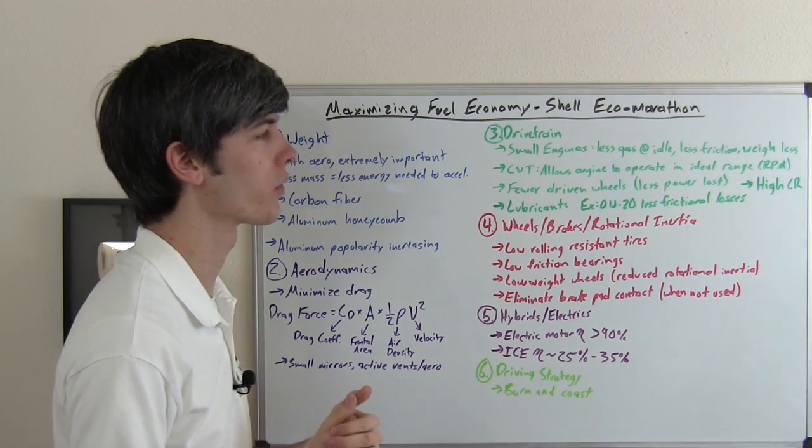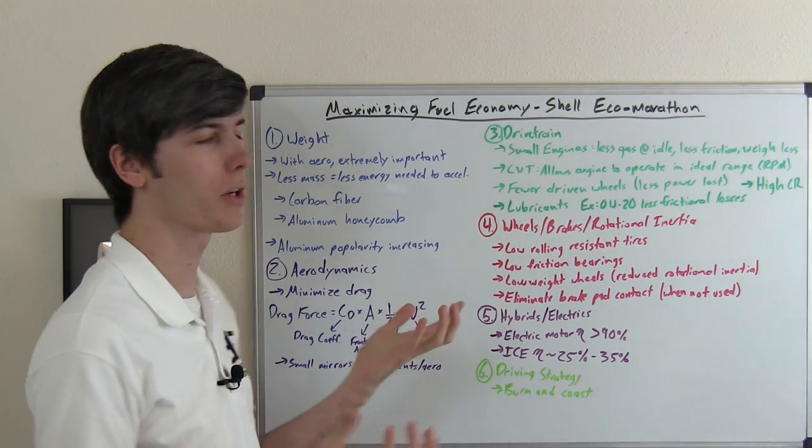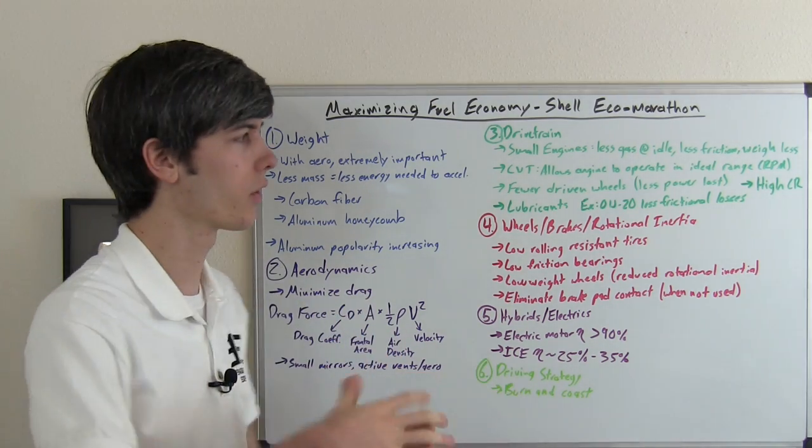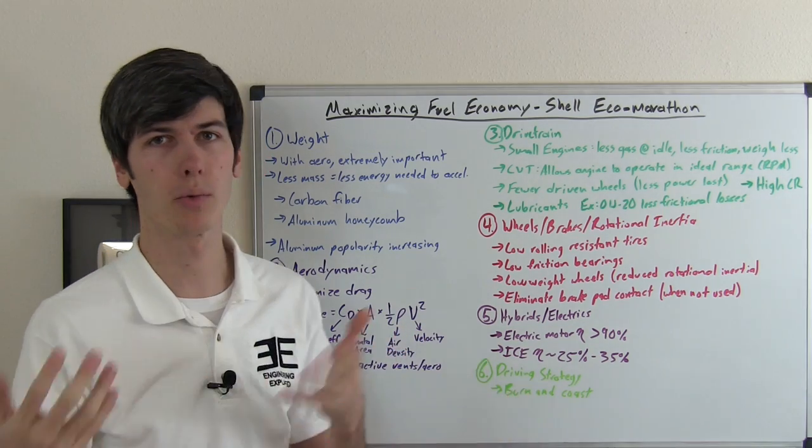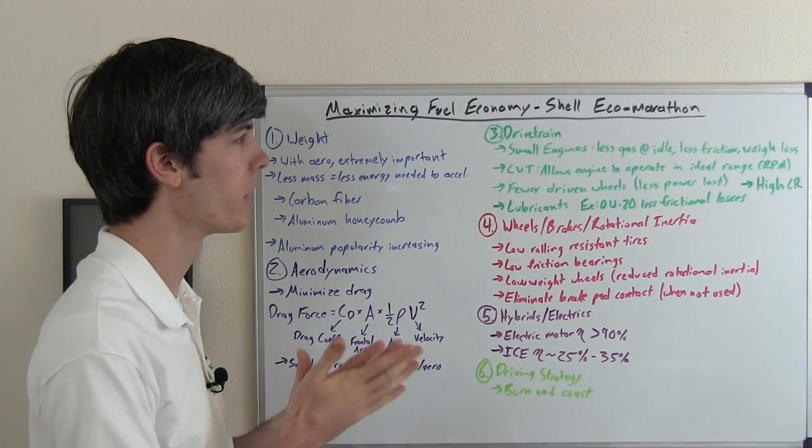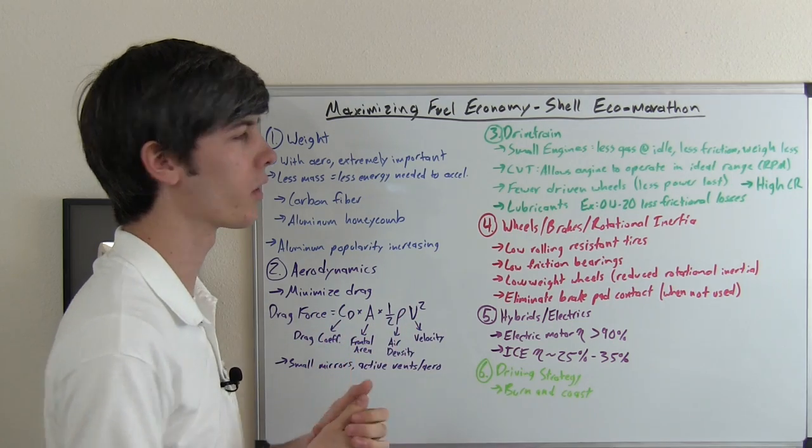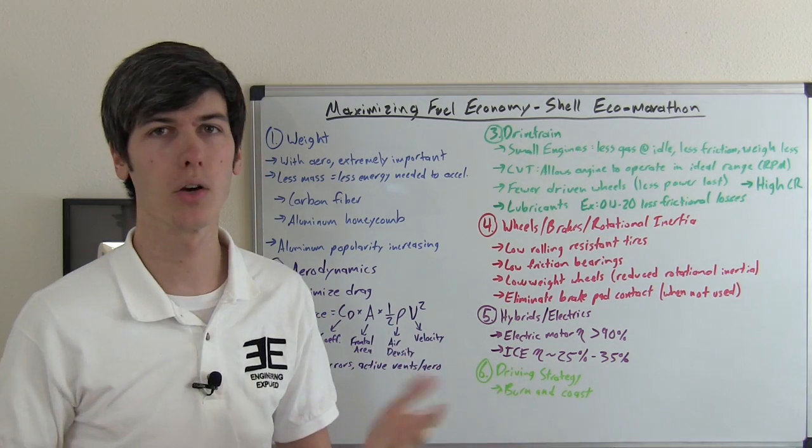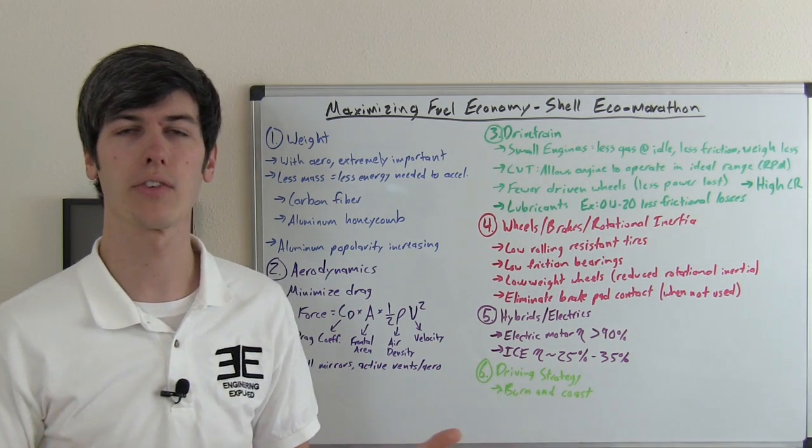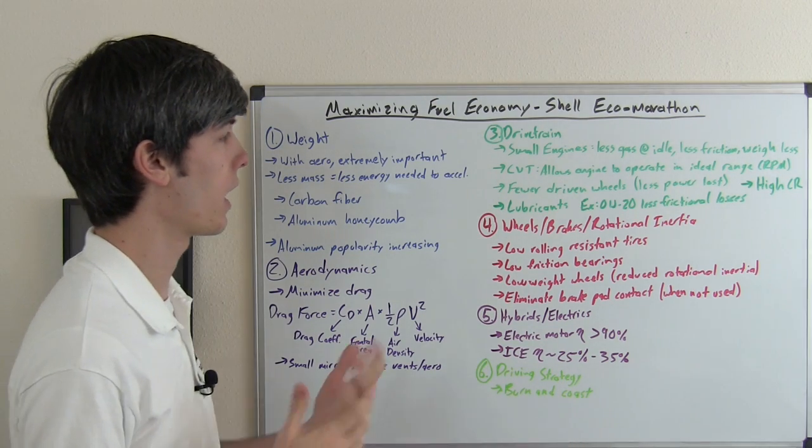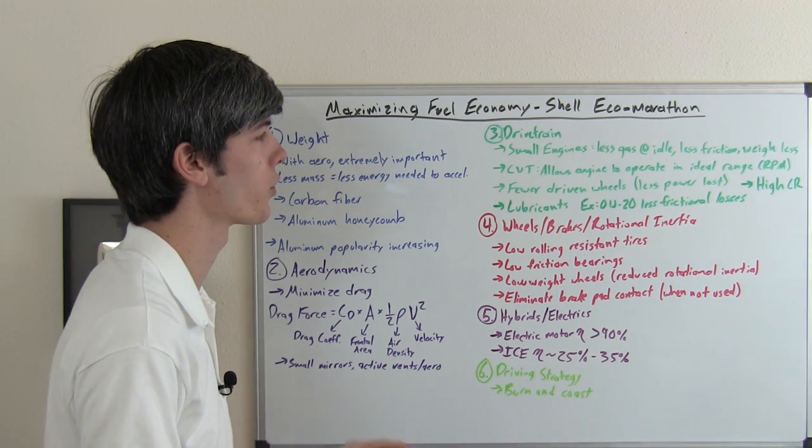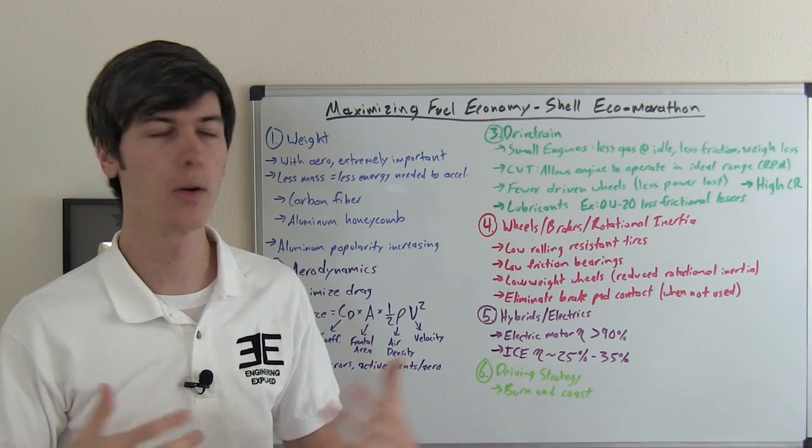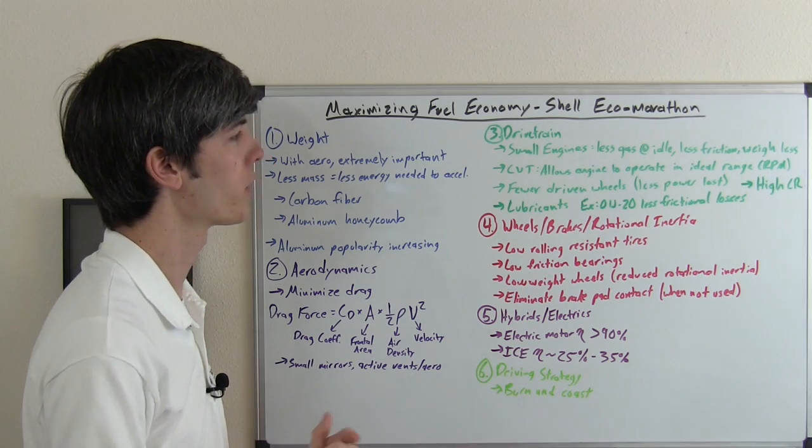Now also fewer driven wheels. Front-wheel drive, you're gonna have pretty much the least amount of power lost, assuming your engine is also mounted in the front. You could have the same situation if you have a rear-mounted engine driving the rear wheels, but basically you want fewer driven wheels. All-wheel drive, you're gonna have more energy lost through the drivetrain. Higher compression ratio increases the thermal efficiency of the engine, so that's also important in achieving high efficiency. And also a lot of manufacturers are moving towards lower viscosity grade oils to have less frictional losses within the engine and throughout the drivetrain.